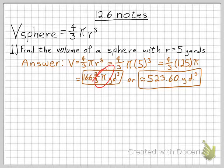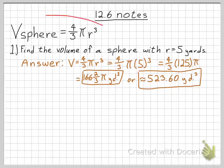So that would be the volume of the sphere in exact form. And that is approximately equal to 523.6 cubic yards. If you just multiply 166 and 2 thirds by pi. So that's the formula for the volume of a sphere.